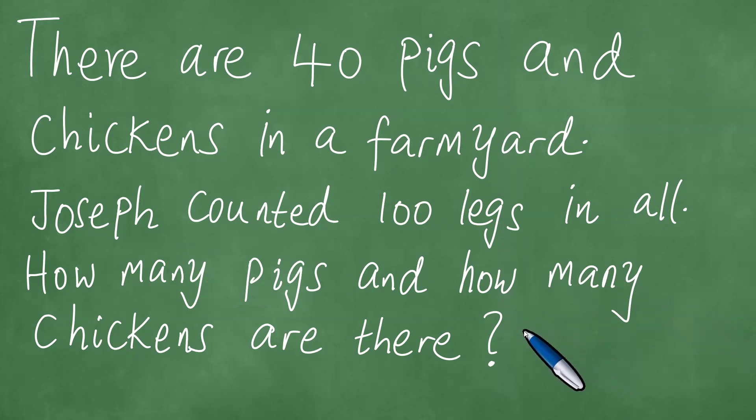In this lesson, we shall proceed to solve this word problem in front of us. There are 40 pigs and chickens in a farmyard. Joseph counted 100 legs in all. How many pigs and how many chickens are there?